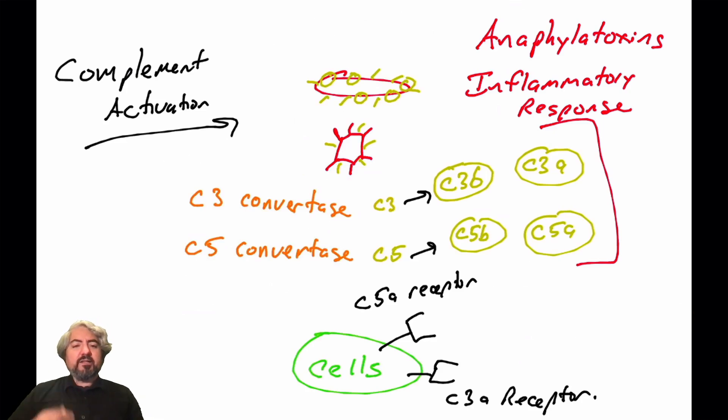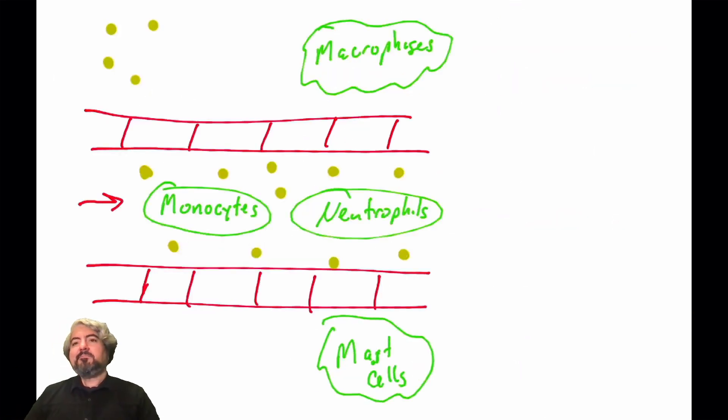There are some cells in the body that have receptors for C5A and C3A. C5A will bind the C5A receptor, C3A will bind the C3A receptor, and that's going to trigger cells to change their function. Here I've drawn behind me a blood vessel. In the blood vessel, you find cells—red blood cells, obviously, but I'm not drawing them. But you also find white blood cells like neutrophils and monocytes. If you recall, never let monkeys eat bananas. Neutrophils are very abundant in the bloodstream. Monocytes are also very abundant in the bloodstream. In our tissues, we have cells like macrophages and mast cells. I've drawn them outside of the bloodstream in tissues.